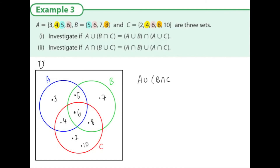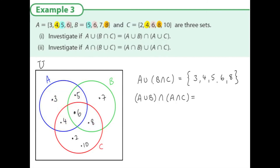Let's investigate: A union (B intersection C). I color circle A first, then shade B intersection C — the overlap between B and C. The union of these means anything shaded at all, so we have three, four, five, six, and eight. Is that the same as (A union B) intersection (A union C)? I shade A union B in yellow, then A intersection C — the overlap between A and C — which gives four and six in green. Clearly that's not equal to the first one, so it's not a true statement.